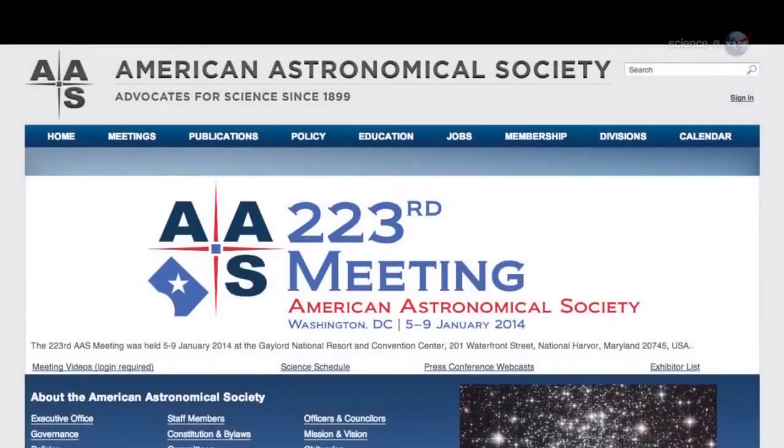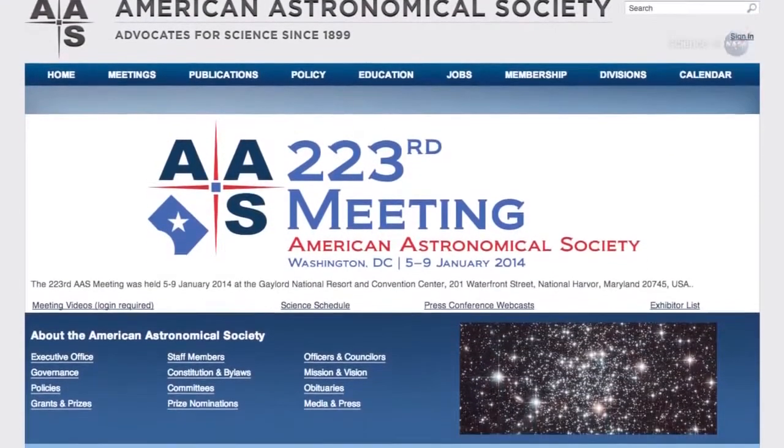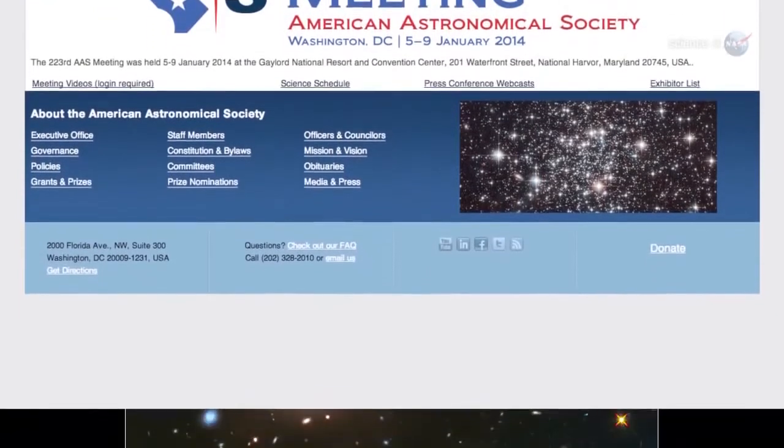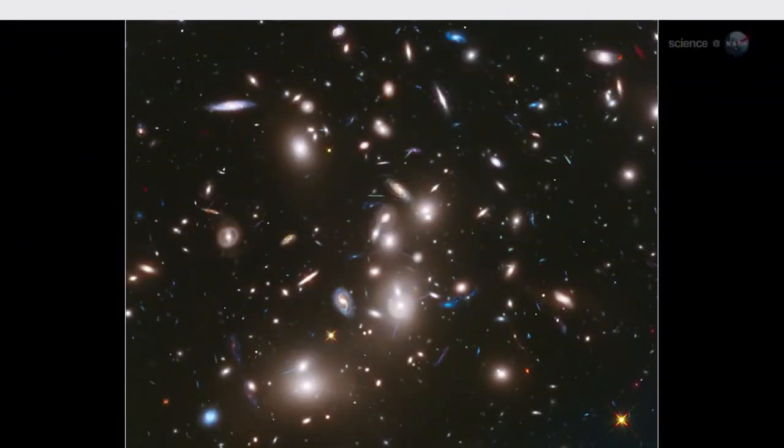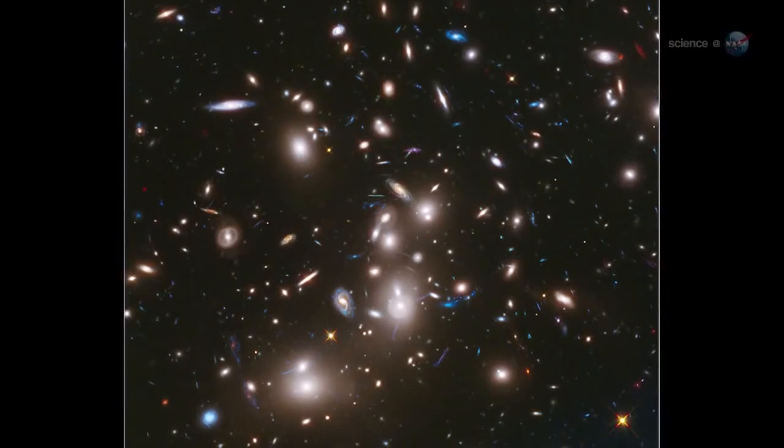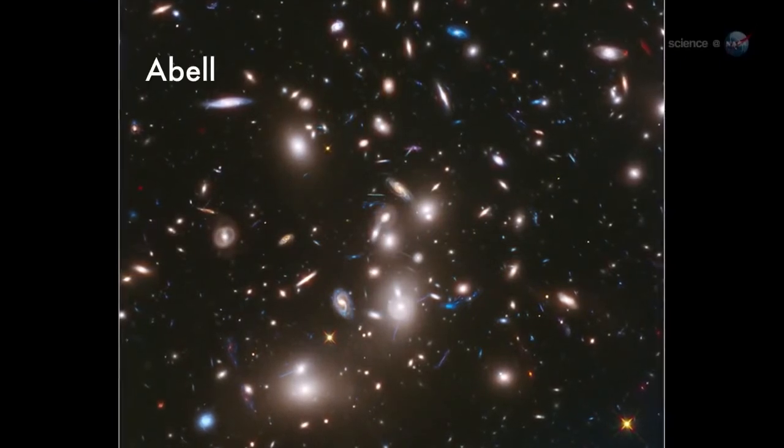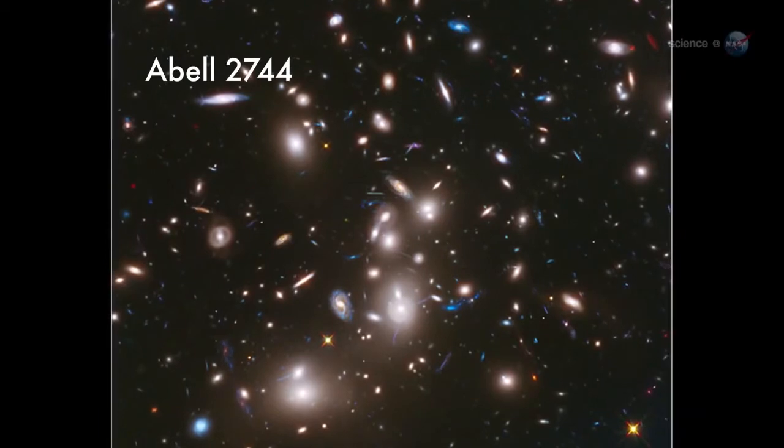At the January 2014 meeting of the American Astronomical Society, researchers revealed a patch of sky seen through a lens more than 500,000 light-years wide. The lens is actually a massive cluster of galaxies known as Abell 2744.